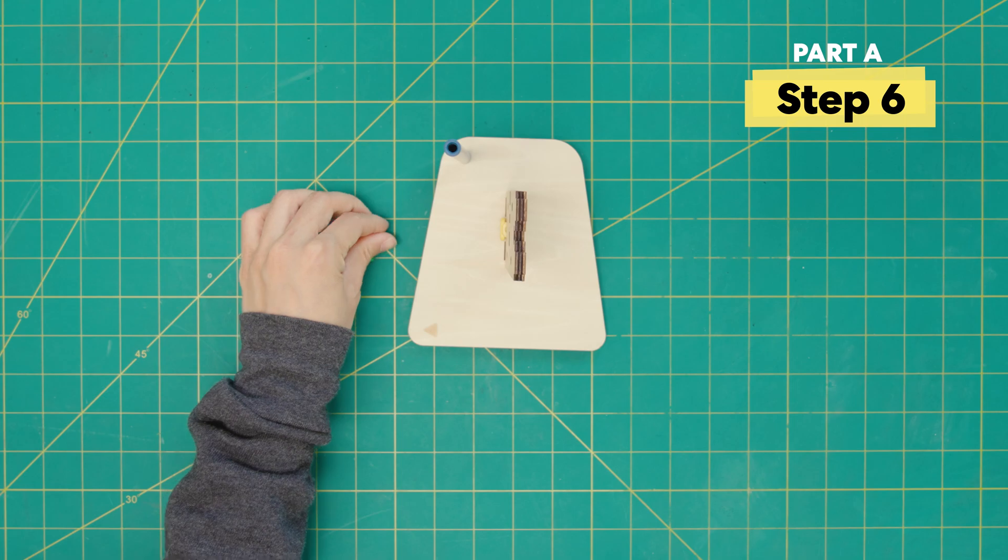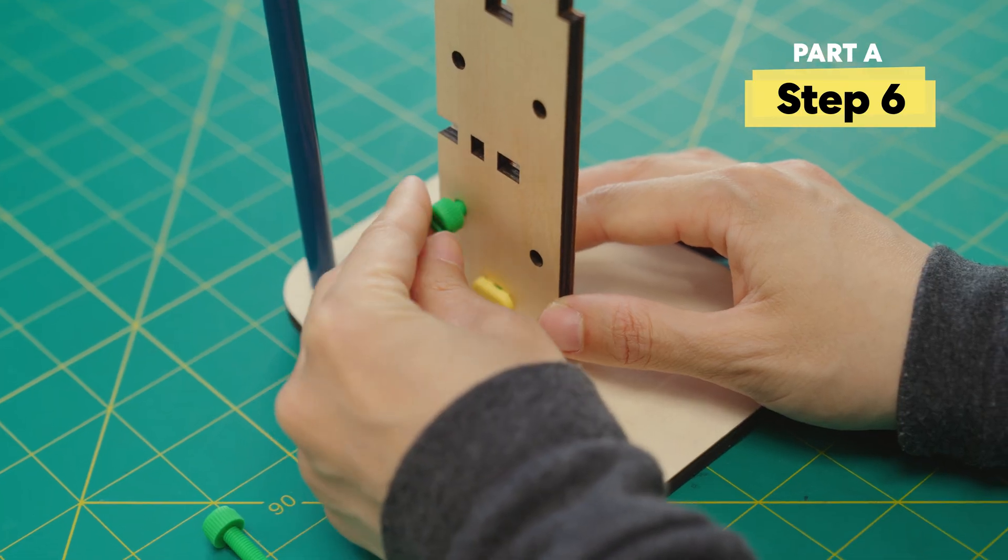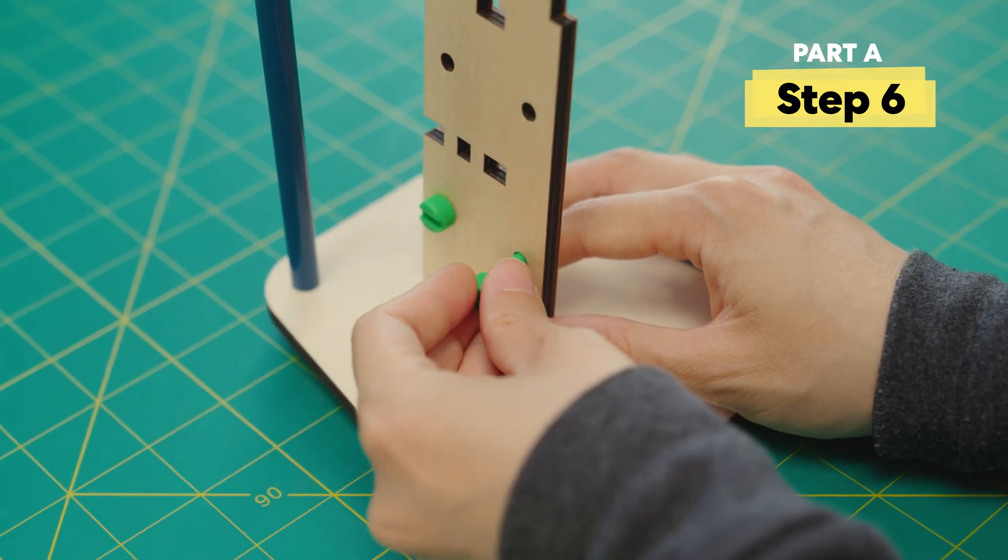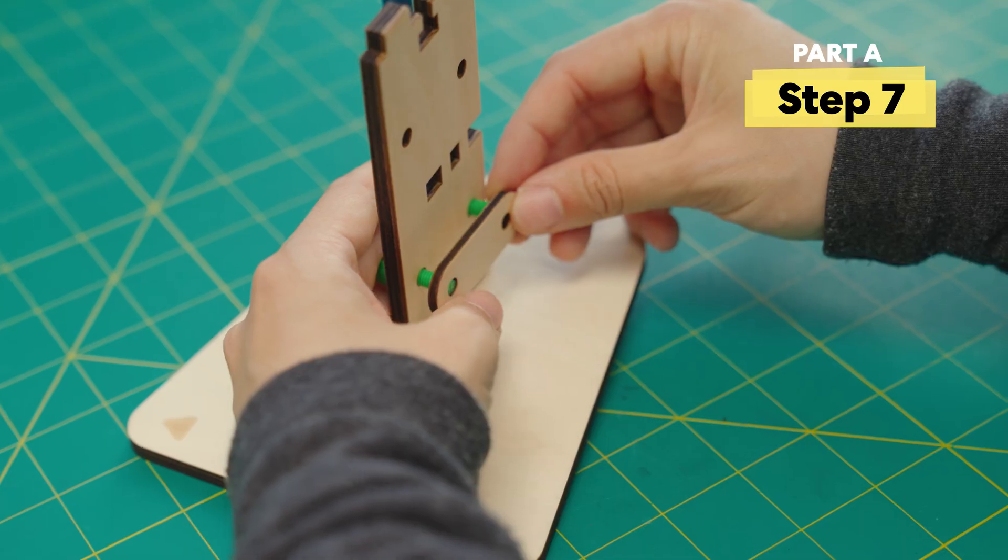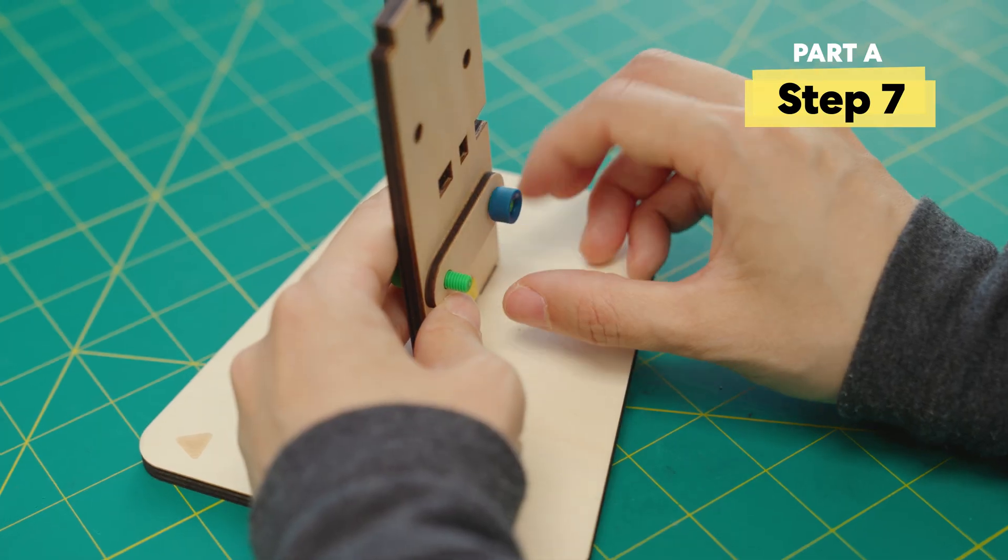Attach two green bolts here. Attach this little pillow-shaped wooden piece here and use the nuts to hold it in place.